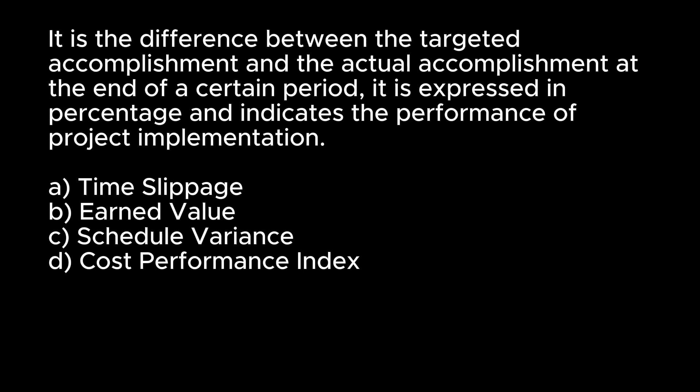It is the difference between the targeted accomplishment and the actual accomplishment at the end of a certain period; it is expressed in percentage and indicates the performance of project implementation. A. Time slippage. B. Earned value. C. Schedule variance. D. Cost performance index. Answer: A. Time slippage.